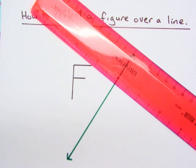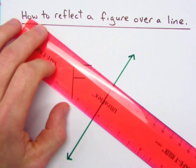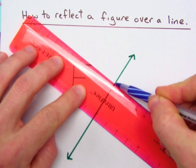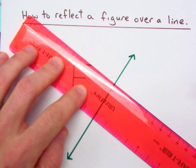Okay, so that is part one. The next part is going to be measuring the distance from the line of reflection to the point that we're trying to reflect.